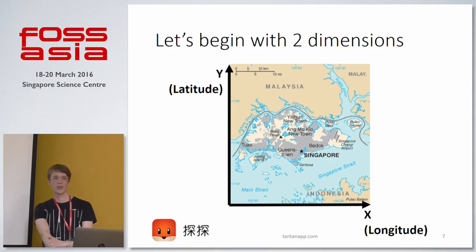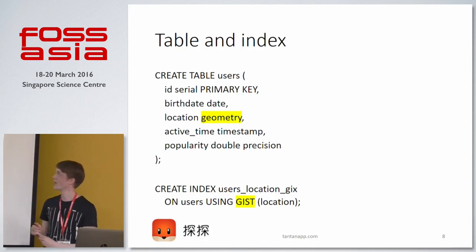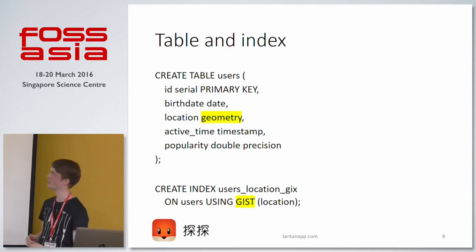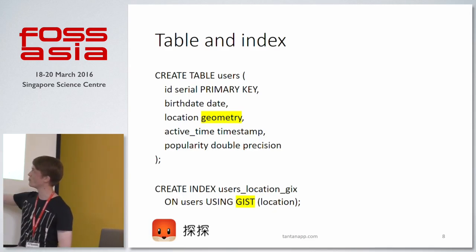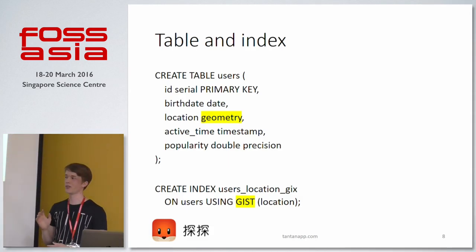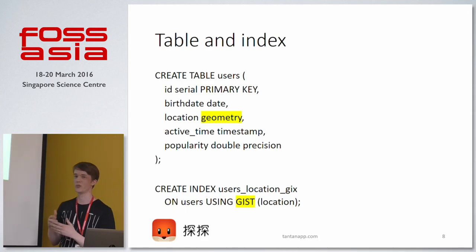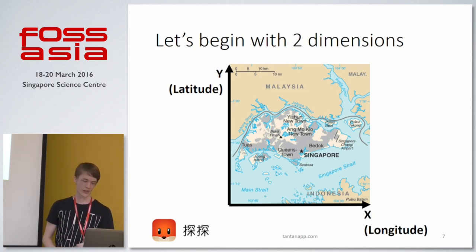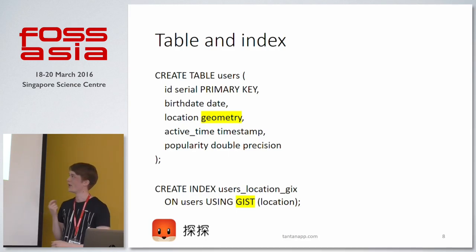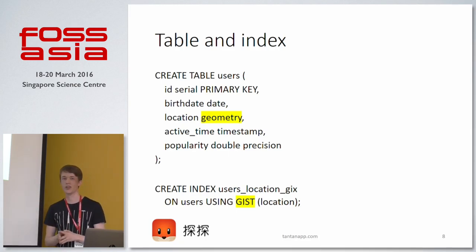To show this in more detail I created a table called 'users', pre-filled with around 1 million users from our production system. It contains user ID, birthday, location, active time, and something called popularity. The interesting thing is the location, which is a geometry type that stores x and y coordinates. Finally we create an index on this location column so we can use two-dimensional indexing.